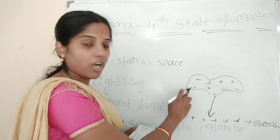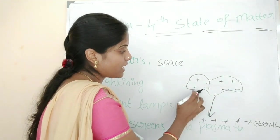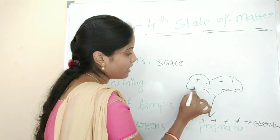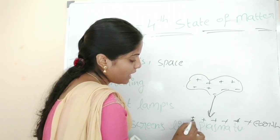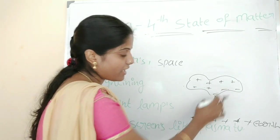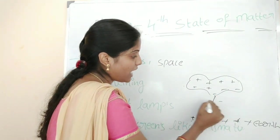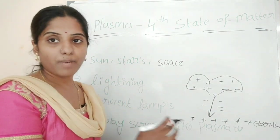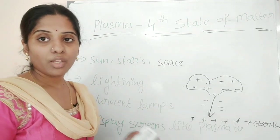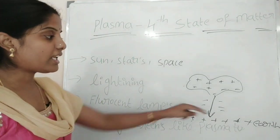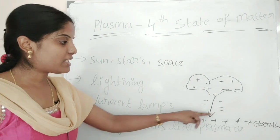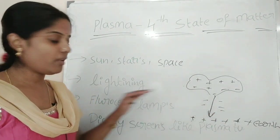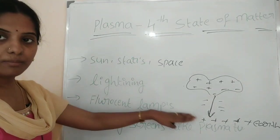Now let's look at lightning. In these clouds, there is water vapor and crystalline ice. This creates positive and negative charges — very strong attractive ions. This enormous heat, in the millions, is what produces lightning. Lightning is also one of the examples of plasma.